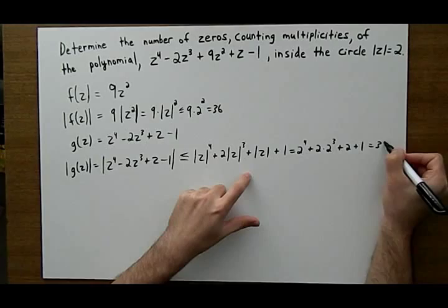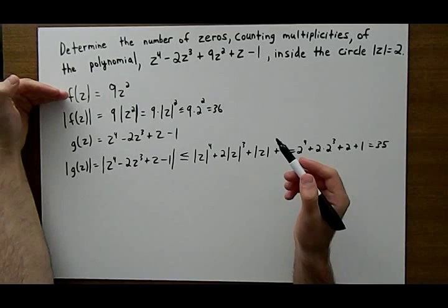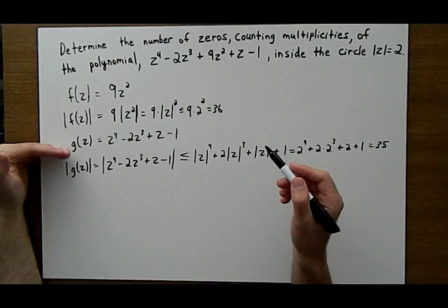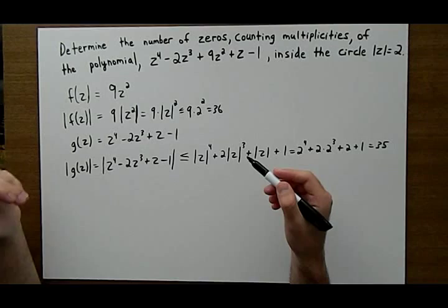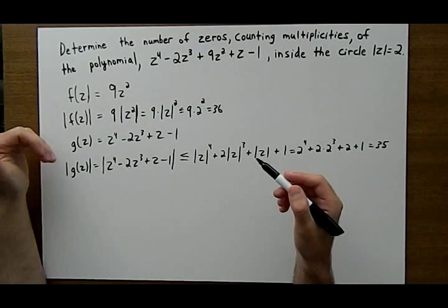Now you have to notice that f of z and g of z are analytic because a polynomial function is an entire function. What it means to be entire is that the function is analytic everywhere on the domain. So that's OK. So condition A has been satisfied in Rouché's theorem.